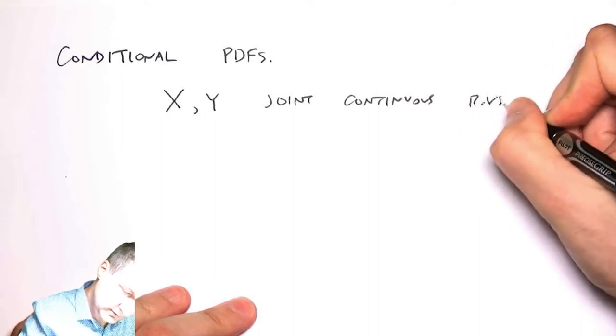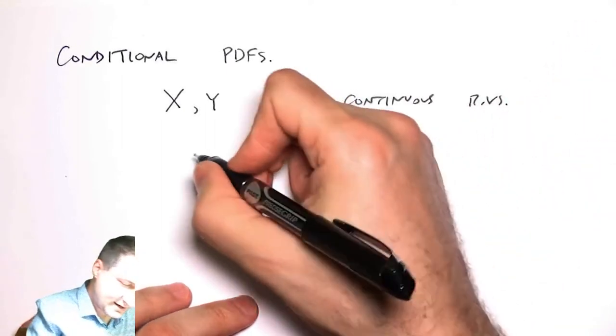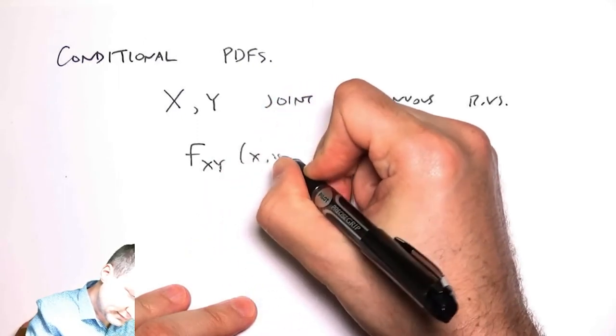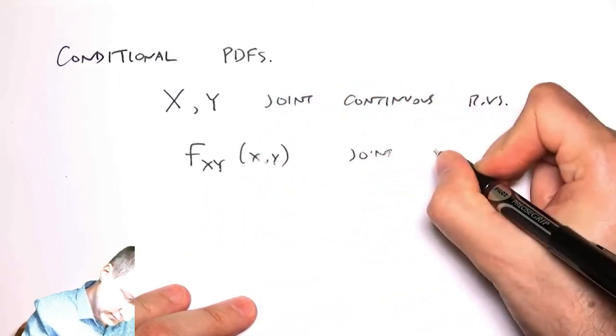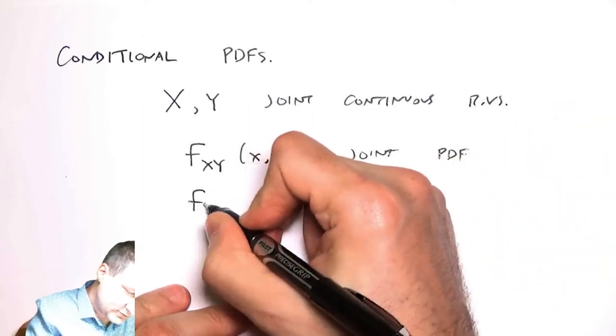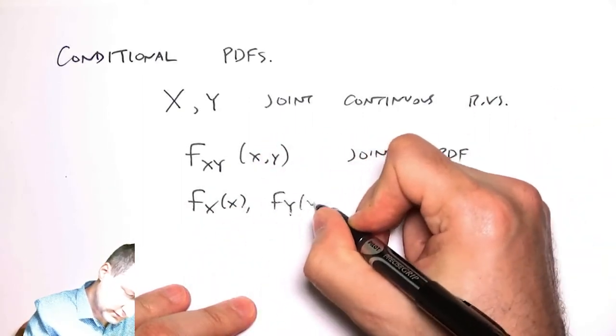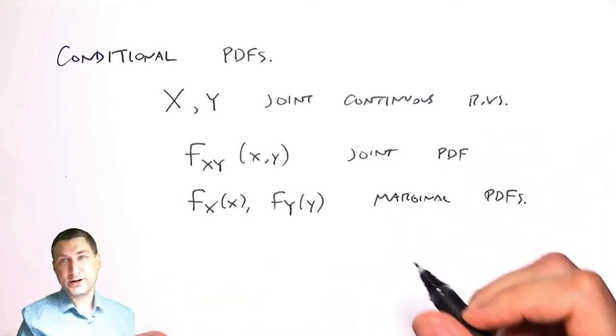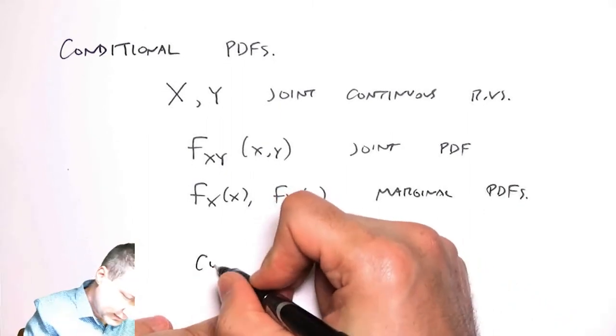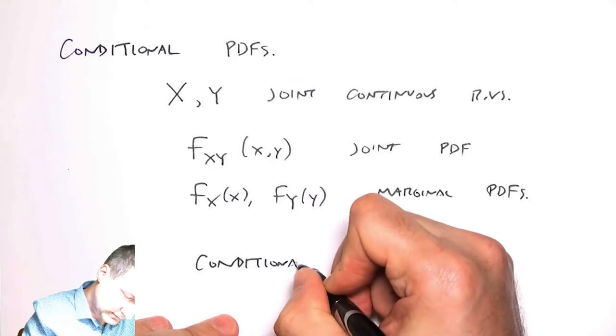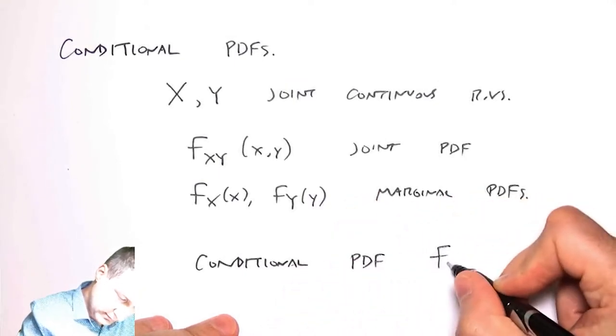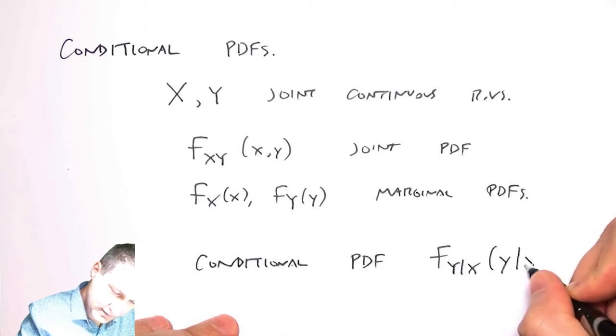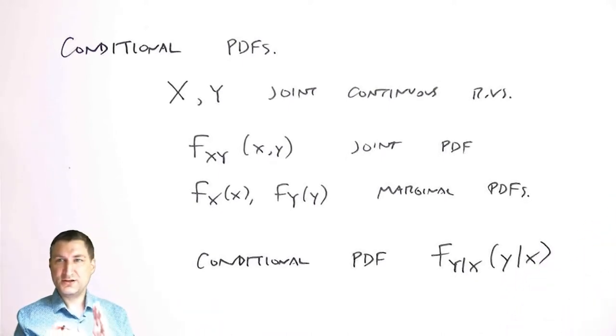So we have this idea that I have the joint PDF and I have the two marginal PDFs. Now I want to know what is the conditional PDF of Y given X—I tell you what X turned out to be and then you compute for me this new distribution of Y that will depend on whatever value of X I came up with.